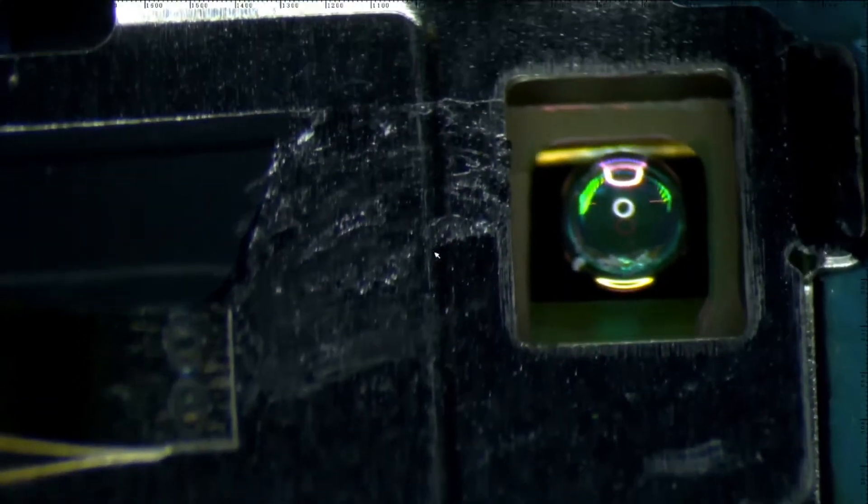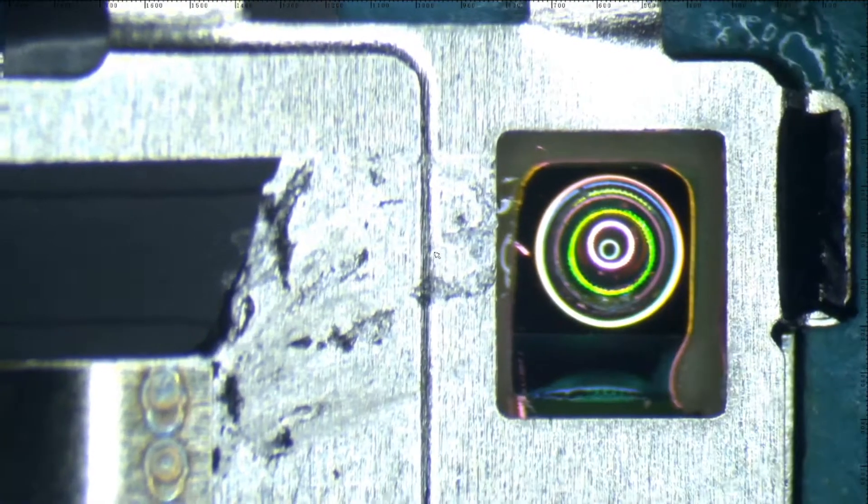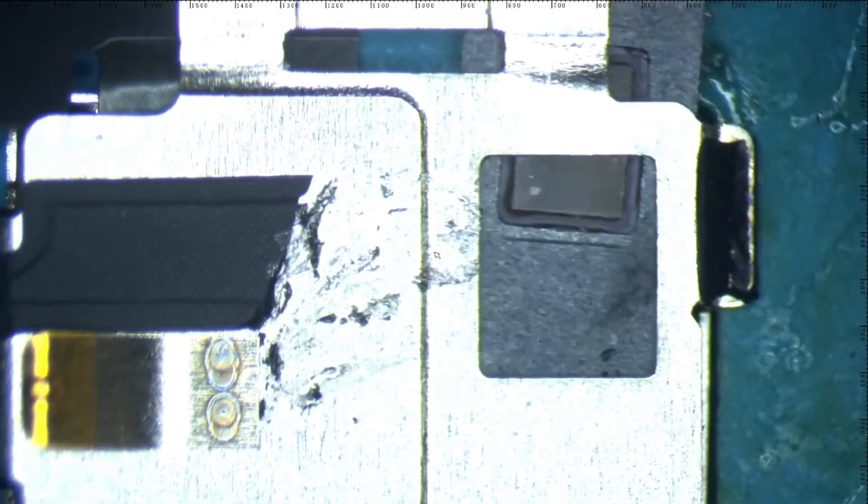Now to glue the flex cable back to the housing, simply slide the dot projector into the housing and apply superglue or instant glue and let it dry. Make sure it is in the correct position.